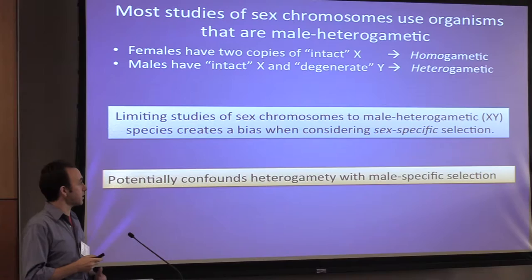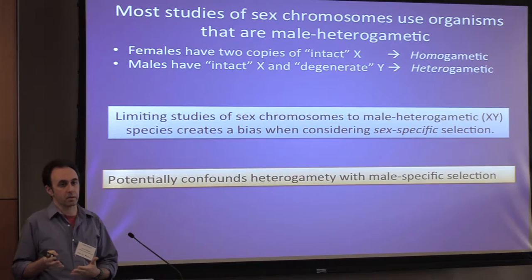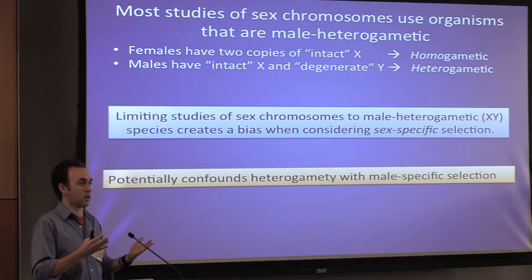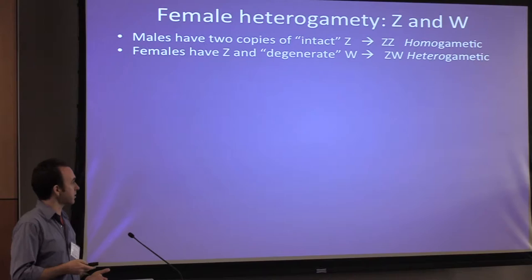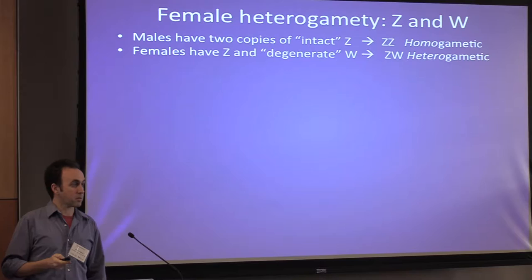If you're only studying sex chromosomes in male heterogametic taxa, you're potentially confounding male-specific selection with heterogamety. What we want to do is test hypotheses associated with heterogamety and sex chromosomes in female heterogametic taxa — taxa with what we call Z and W chromosomes, where Z is the intact chromosome and W is the degenerate chromosome analogous to the Y.